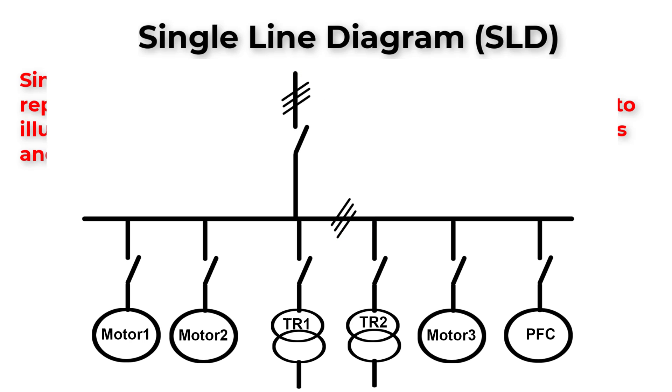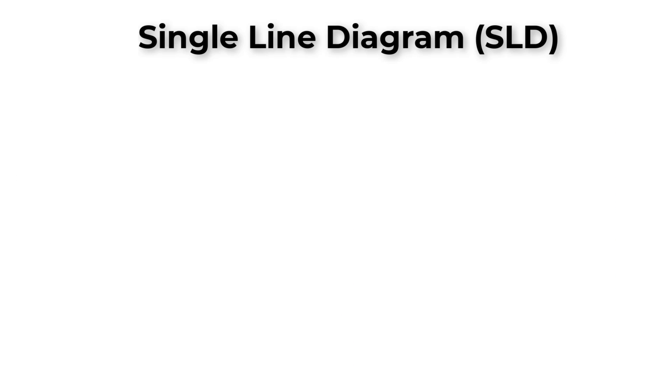We will draw a symbol for one pole circuit breaker instead of drawing a three pole circuit breaker, and the bus coupler will be also one line not three lines, and so on.